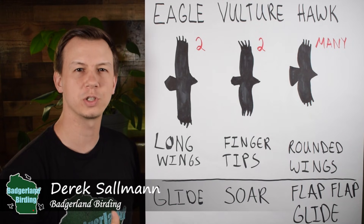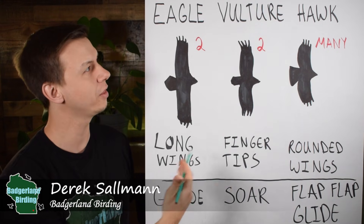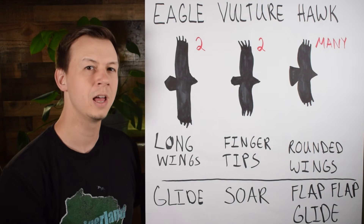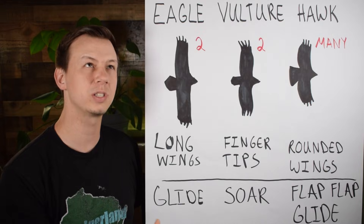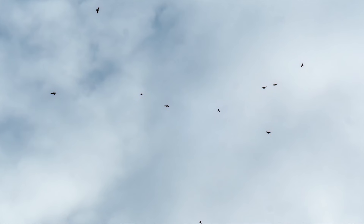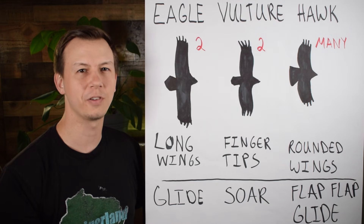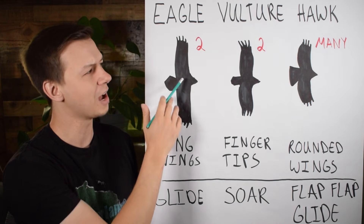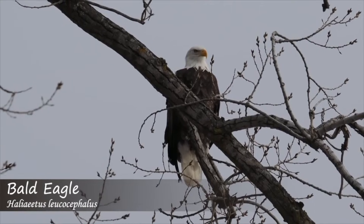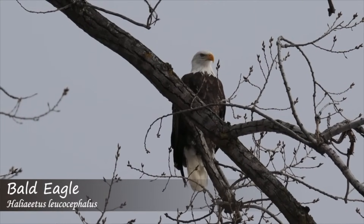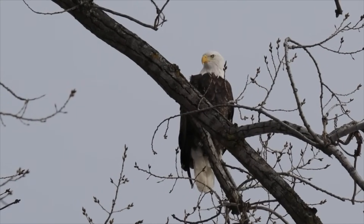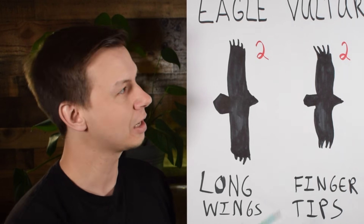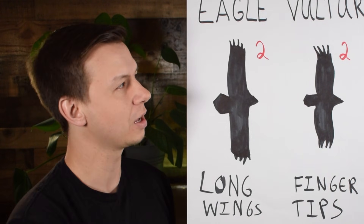Eagle versus vulture versus hawk — how do you tell the difference between these species? These are birds you may see soaring all at the same time up in the air, and that's what I think is the most difficult time to identify them. If you're able to see them perched, you can see size and color better, so it's easier to differentiate. When they're up in the sky, they might be backlit and you may just be getting a silhouette view. So that's what we're going to focus on today.